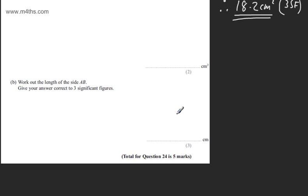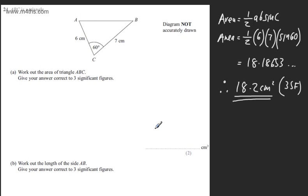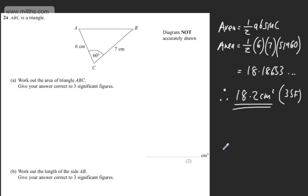In part B for three marks, we're asked to work out the length of side AB. We're asked to give our answer correct to three significant figures. So we can use the cosine rule here. The cosine rule, and just jotting it down, let's write this here.